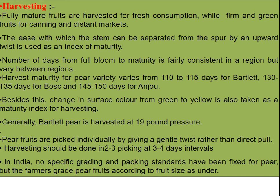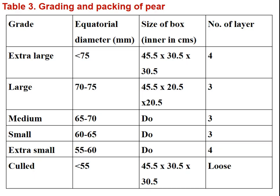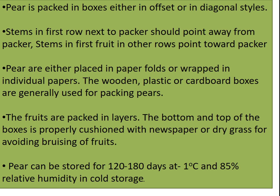In India, no specific grading and packaging standards have been fixed for pear, but farmers grade fruits according to size as extra large, large, medium, small, extra small, and cull. Pear is packed in boxes in offset or diagonal styles. Fruits are placed in paper folds or wrapped individually in papers. Wooden, plastic, or cardboard boxes are used for packing. The bottom and top of boxes are cushioned with newspaper or dry grass to avoid bruising. Pear can be stored for 120 to 180 days at minus 1 degree Celsius at 85 percent relative humidity in cold storage.